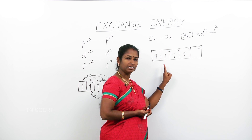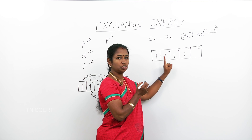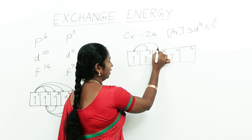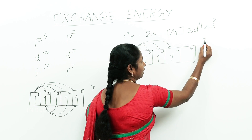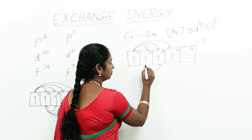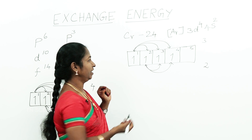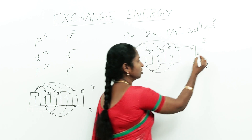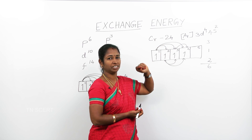Here only 4 electrons are present in 4 orbitals. There is a probability for exchanging their positions with one another. The 1st electron can exchange with the 2nd, 3rd, and 4th — that is 3 exchanges. The 2nd electron can exchange with the 3rd and 4th — that is 2 exchanges. The 3rd electron can exchange with the 4th — that is 1 exchange. So totally 6 exchanges are possible for this expected configuration.